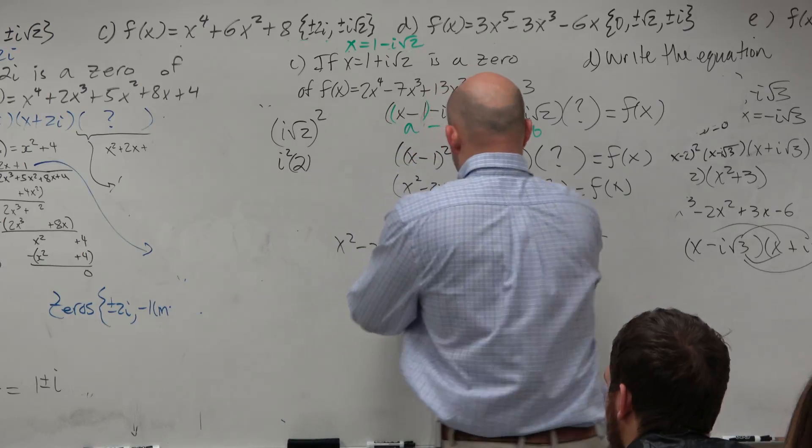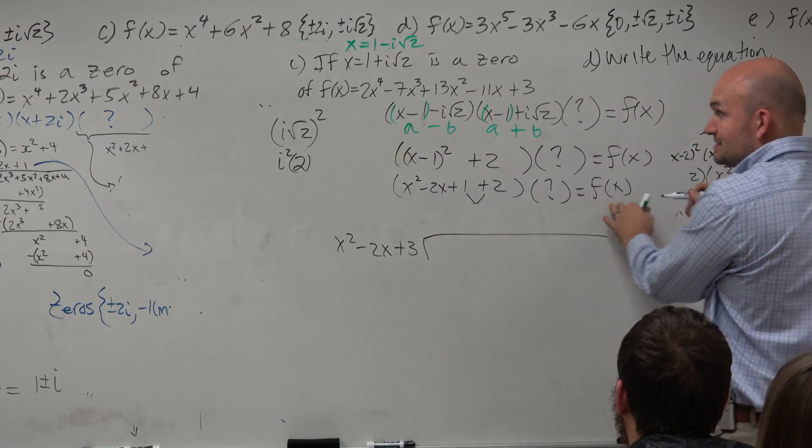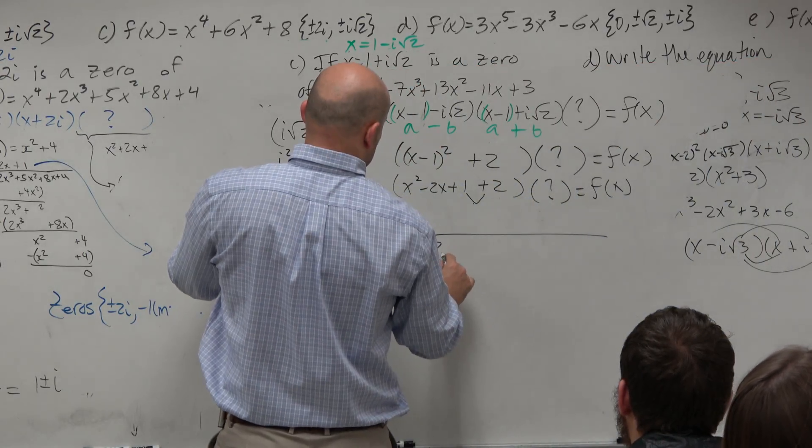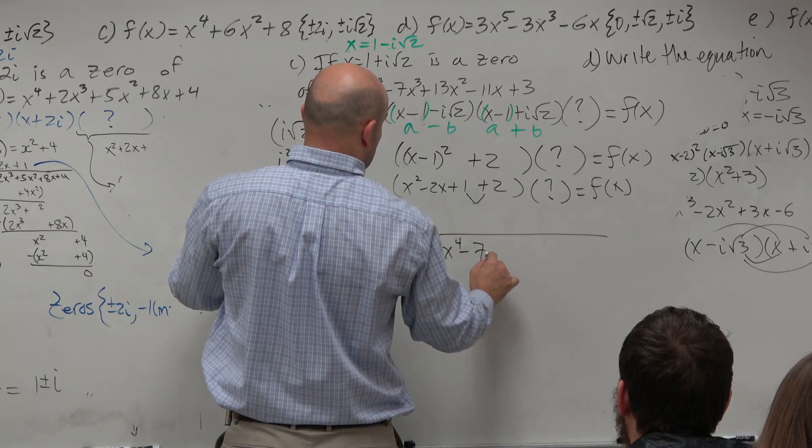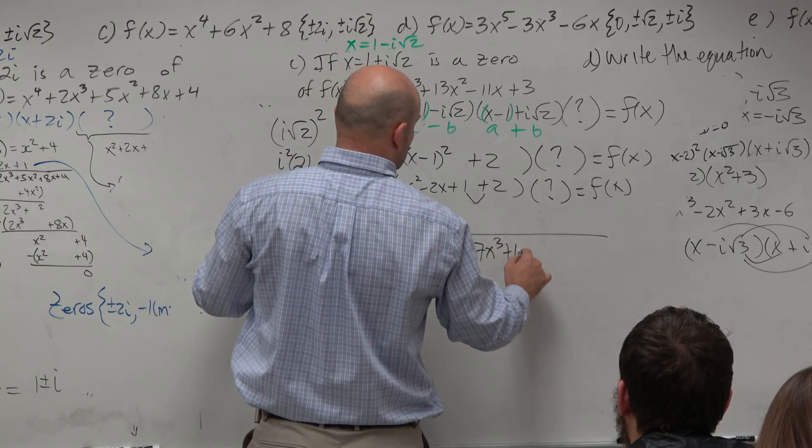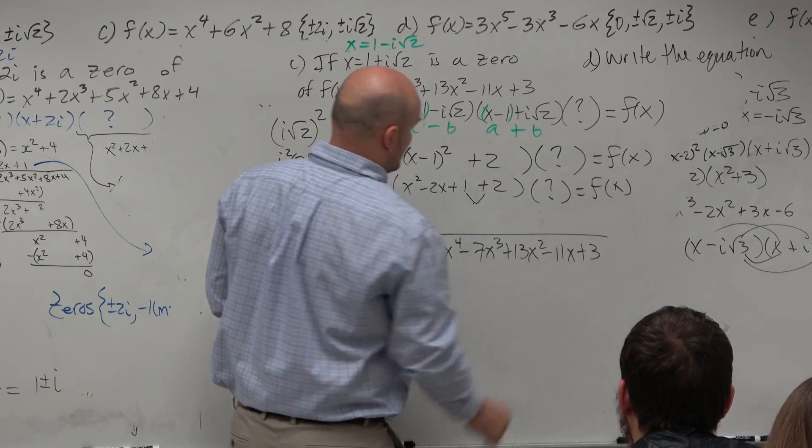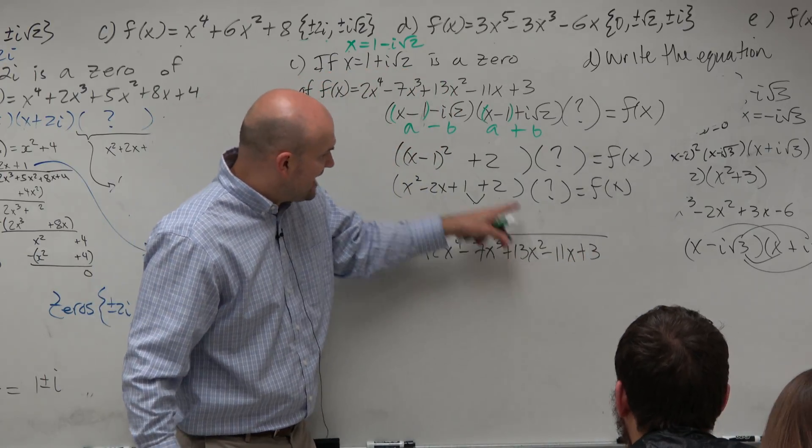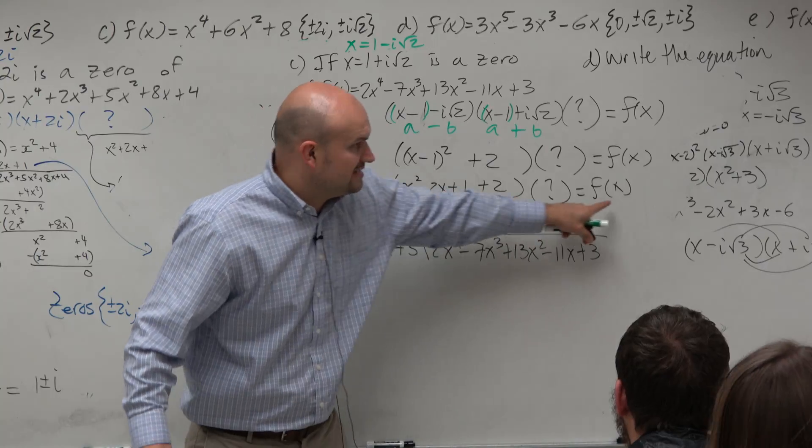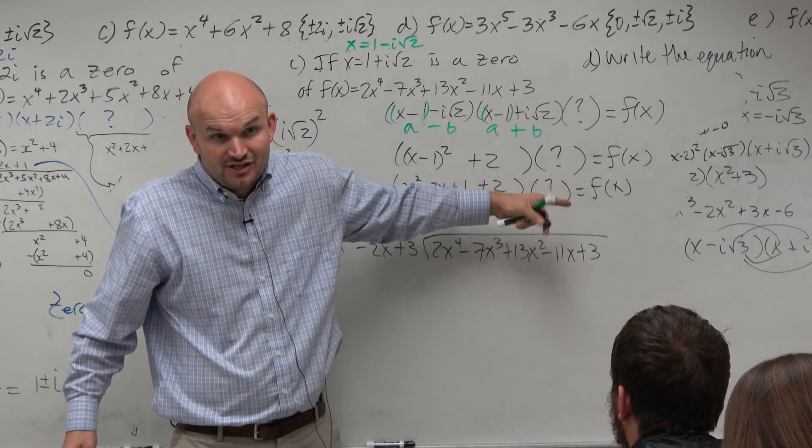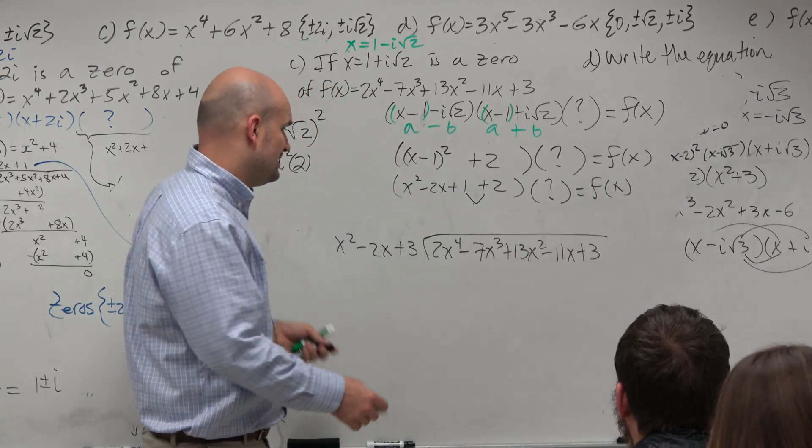And I'm going to divide that. I'm going to divide that into f of x, which is 2x to the fourth minus 7x cubed plus 13x squared minus 11x plus 3. Because when I divide this into that, you divide this into that, you're going to get your other factor. So let's see what we get here.